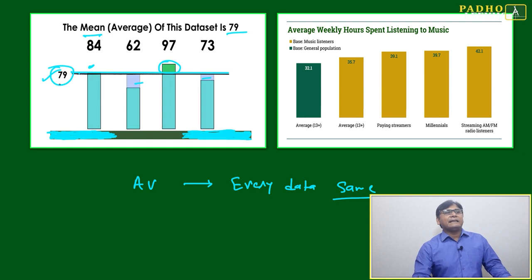This figure will help you understand mean and average. The mean of this dataset is 79. Individual data points are 84, 62, 97, and 73. Two numbers are more than average, two numbers are less than average. We will take from more, give to less, and make everybody equal. That is the concept of average.